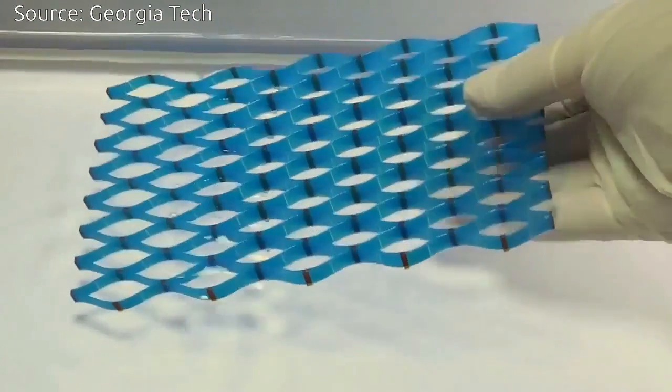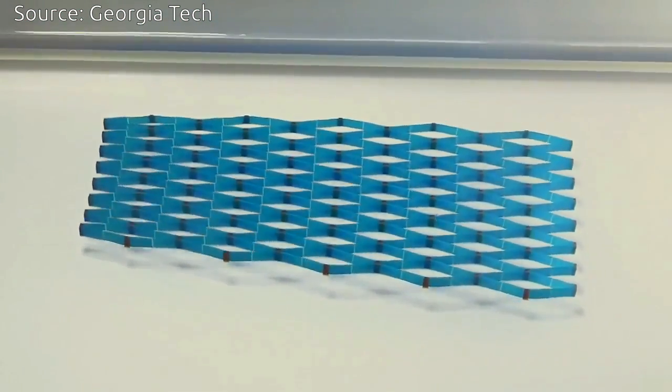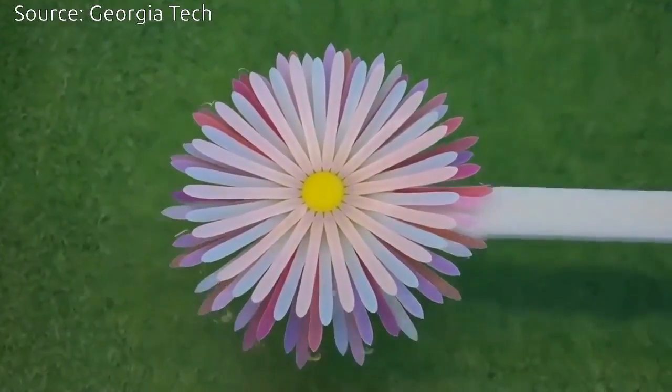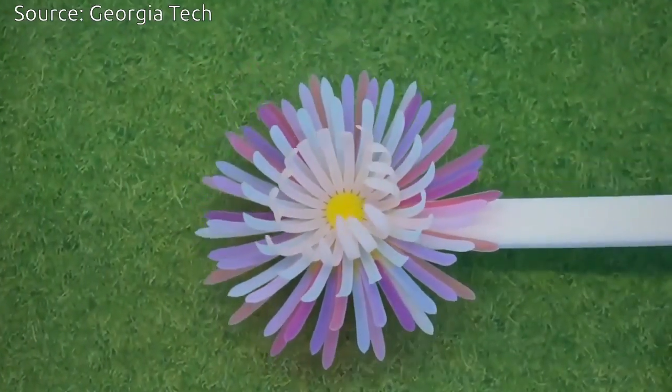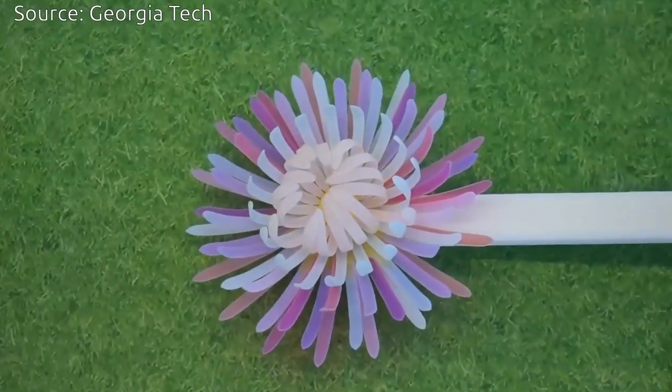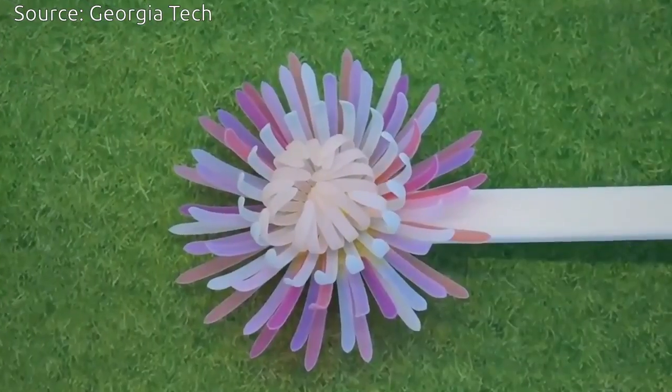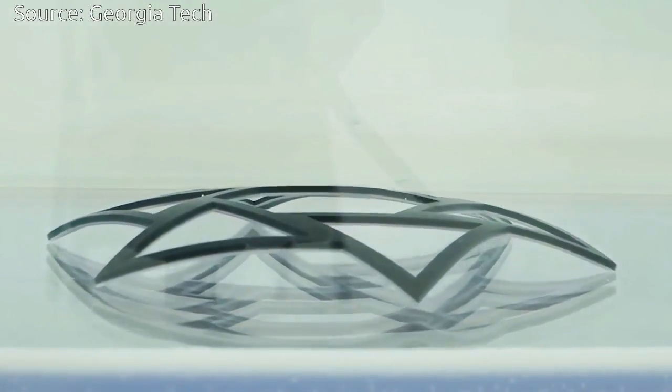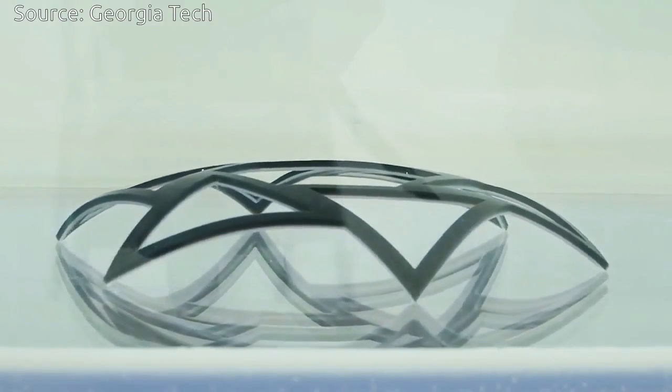To demonstrate the capabilities of the new process, the team fabricated several objects that could bend or expand quickly when immersed in hot water, including a model of a flower whose petals bend like a real daisy responding to sunlight, and a lattice-shaped object that could expand by nearly eight times its original size.